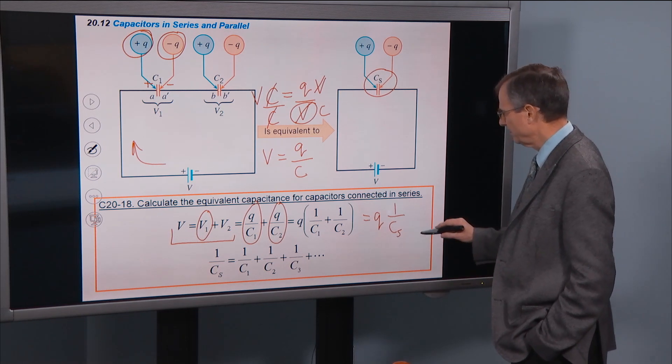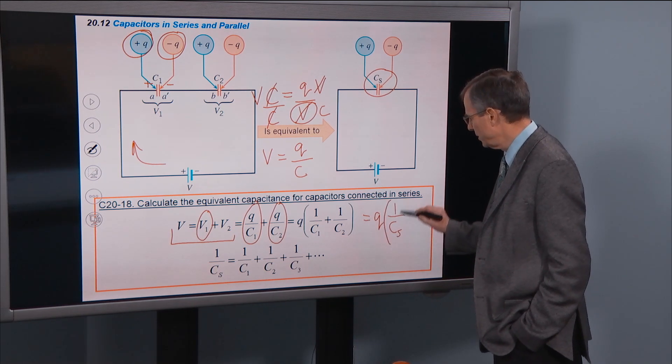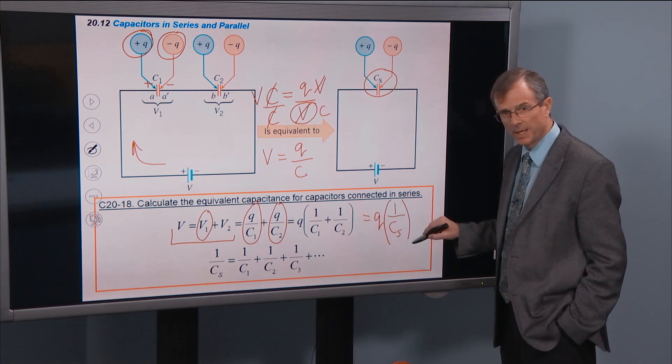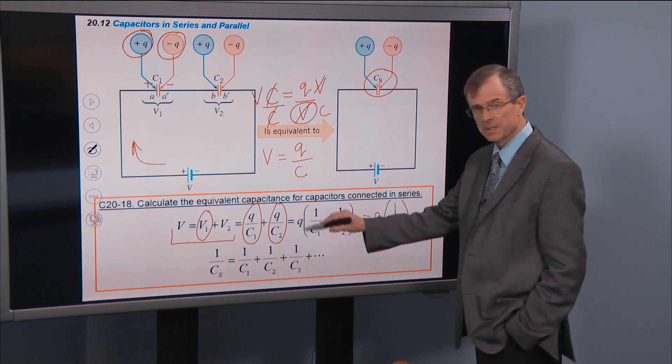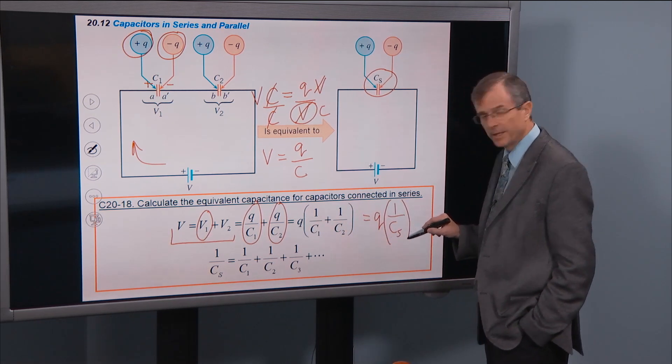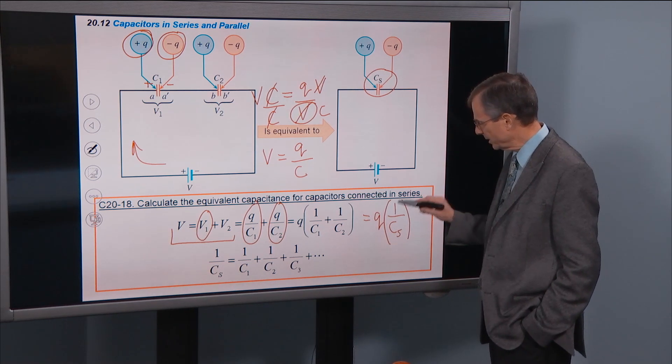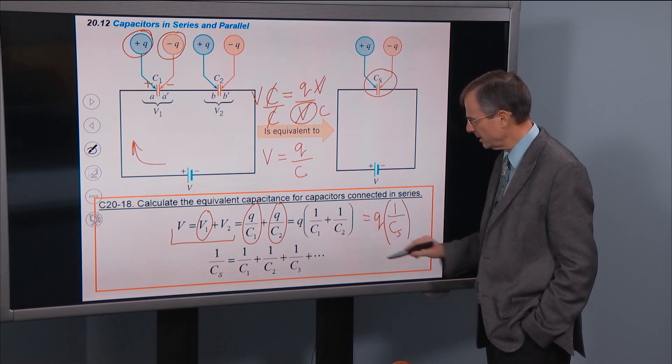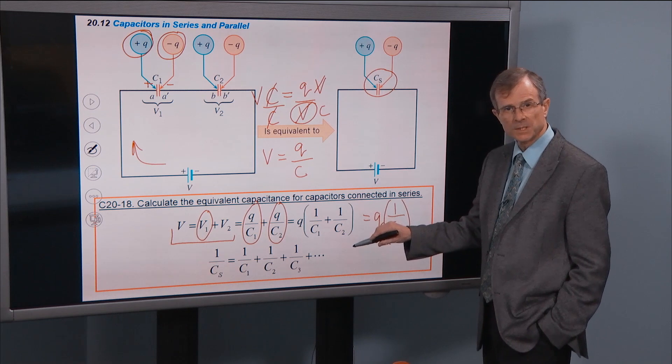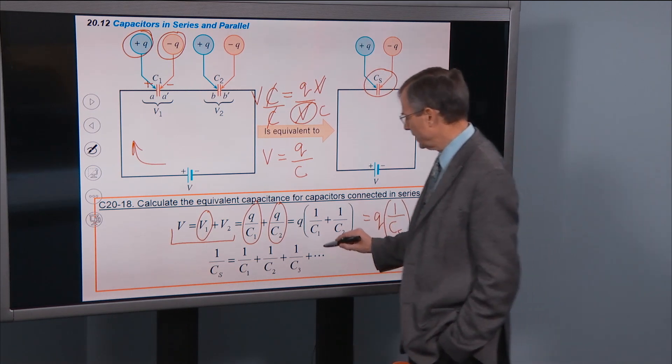Well, that's a happy day because I've got a q out in front of this side and a q out in front of this side, and I can therefore read off the equivalent capacitance: 1 over cS equals 1 over c1 plus 1 over c2. And that's what we have here.